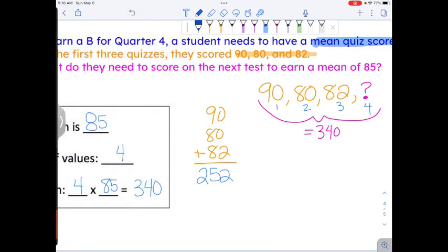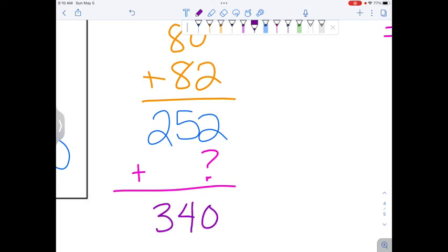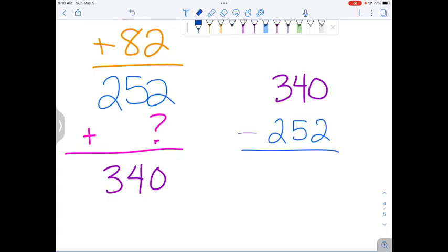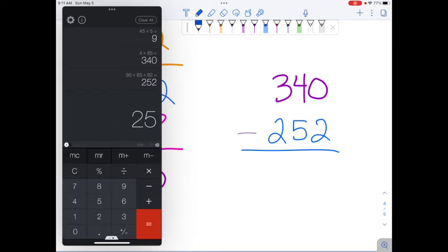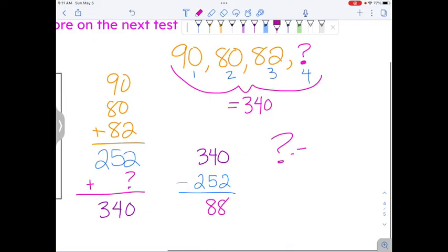But the total is supposed to be 340. So a couple of options to find that unknown number. If you're really good at adding and just being able to see the number, that's fine, but also double check your work. My preferred way is to change this plus problem into a minus problem by doing the inverse. 340, the total, subtract the number we already know, the sum so far. 340 minus 252 is 88. This means they need to score a B plus on the next test. It should be an 88. This unknown is 88.